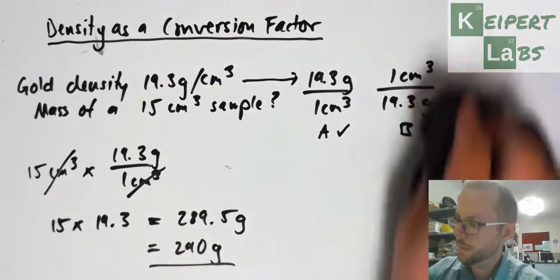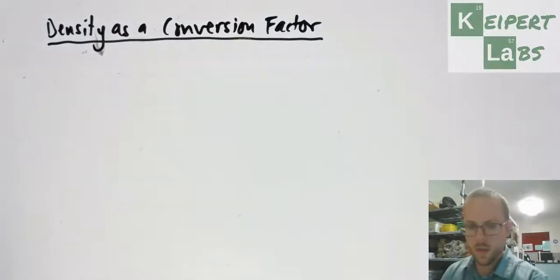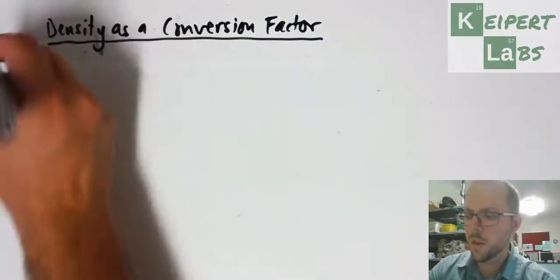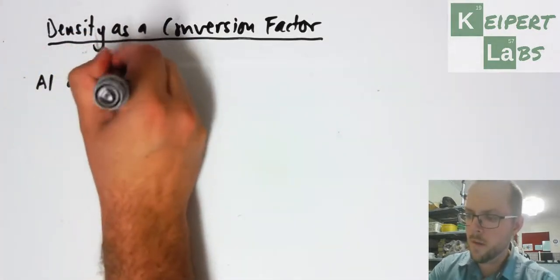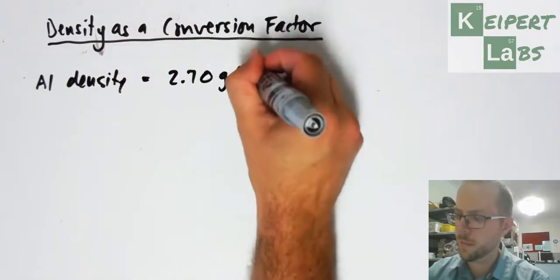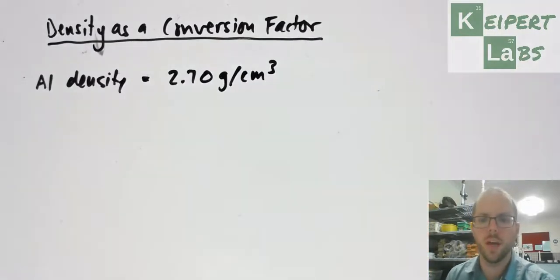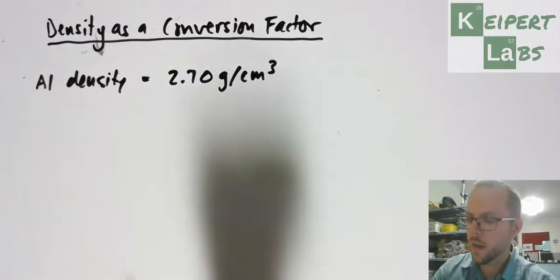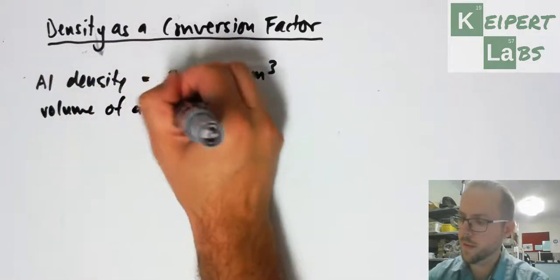Let's go through another example. Aluminum has a density of 2.70 grams per cubic centimeter, which is pretty similar to the value you would have worked out by the slope of the line on the prac we've done previously. I want to know the volume of a 10 gram sample.